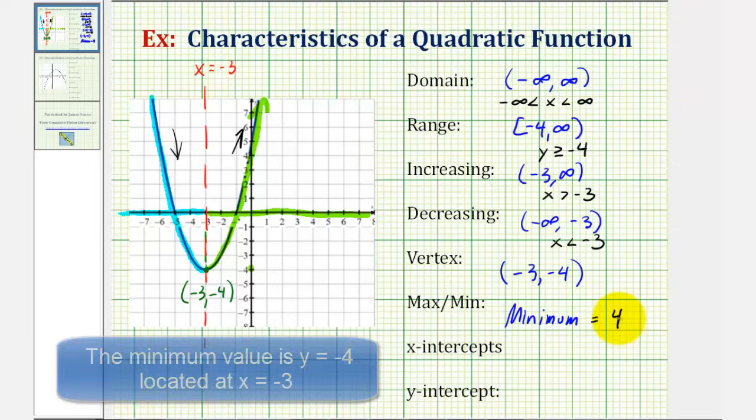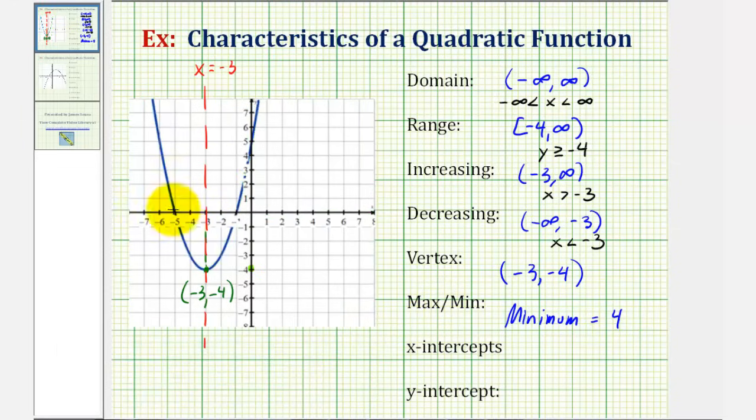Finally, we're asked to find the intercepts. The x-intercepts are the points where the graph crosses the x-axis. Notice how this parabola has two x-intercepts. One here at the point negative five, zero, and one here at the point negative one, zero. And the y-intercept is where the graph crosses the y-axis, which occurs here at the point zero, five.